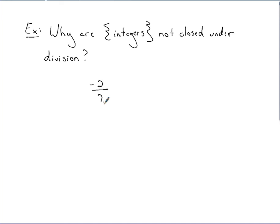Negative 2 divided by 7 is negative 2 sevenths. Negative 2 sevenths is not an integer. If I want to be a little more mathematically pleasing about this, I would say negative 2 sevenths is not a member of the set of integers. And that's why this is not closed under division.